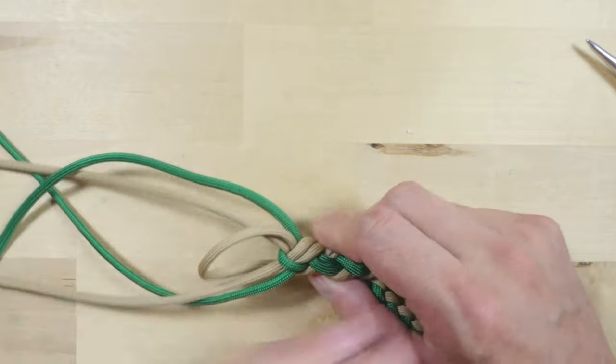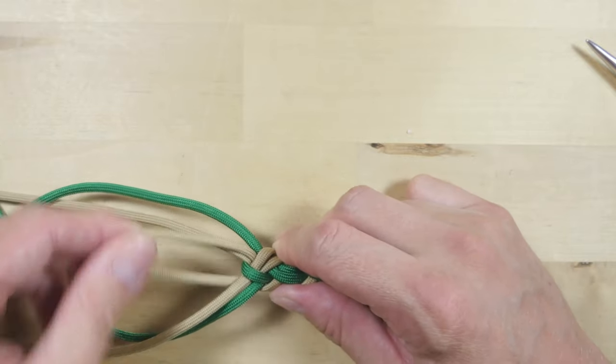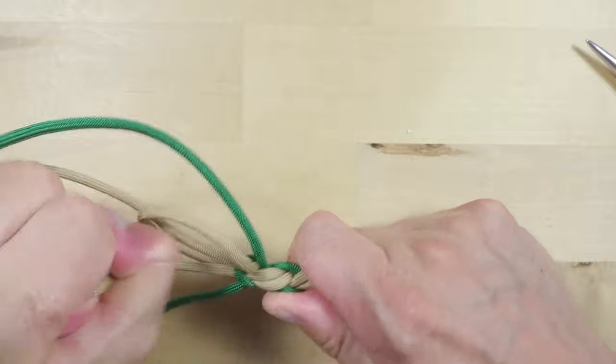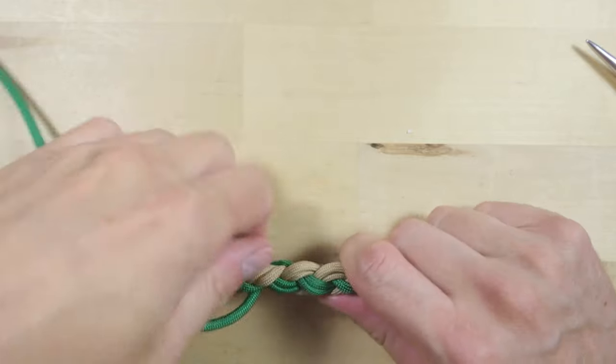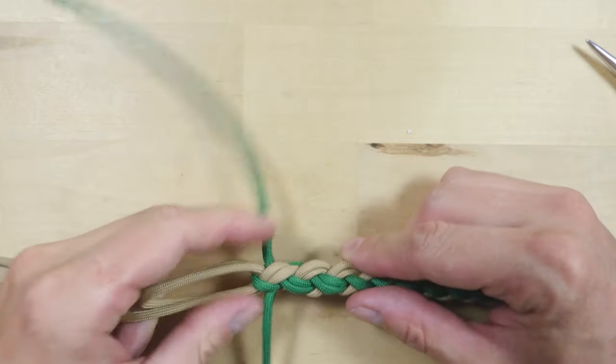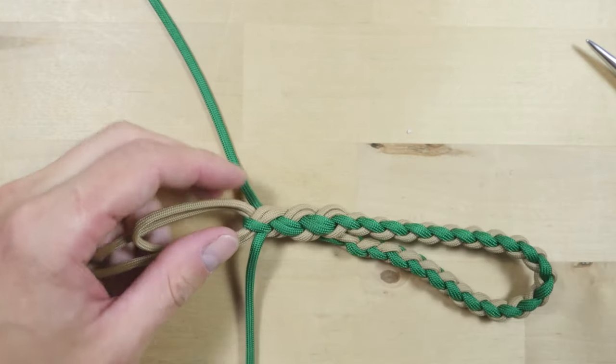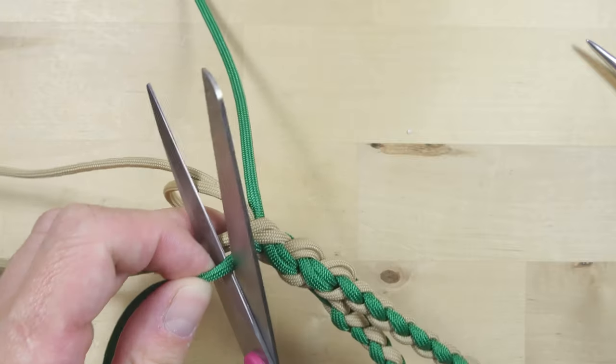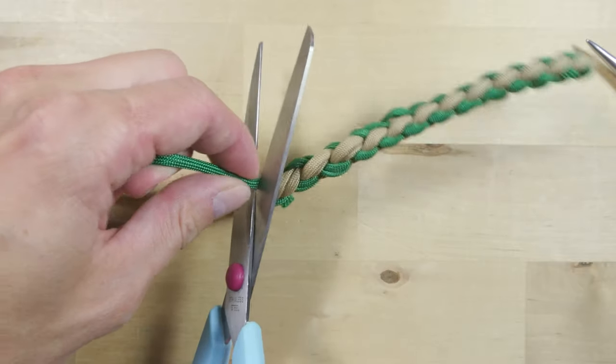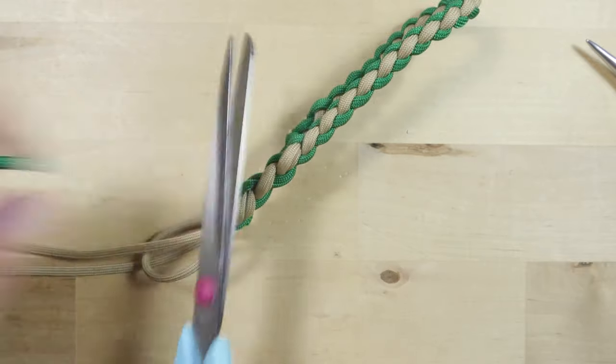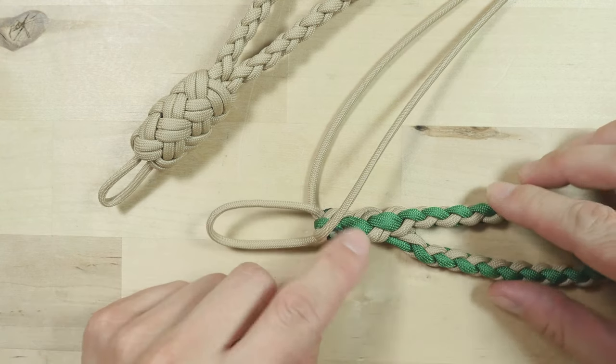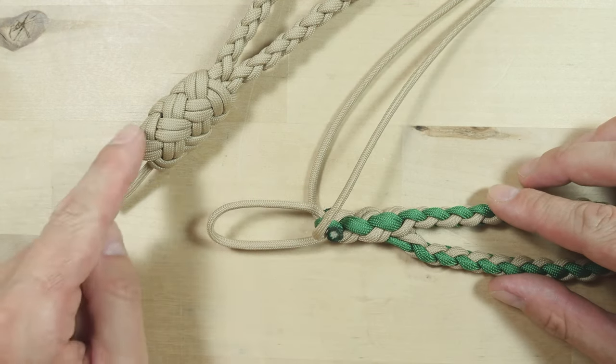So when you get all of the ends to the very top of the braid next to the loop, pull on all of the ends to really lock your strands in. Like this. We are now going to trim these two shorter ends and melt them. We are now going to cover up this joint section using a decorative knot.